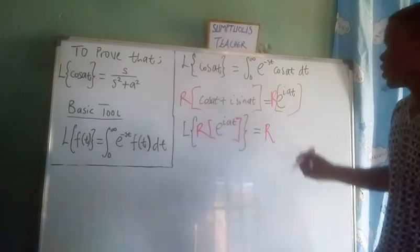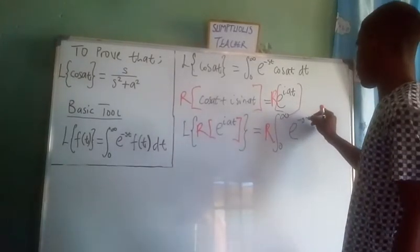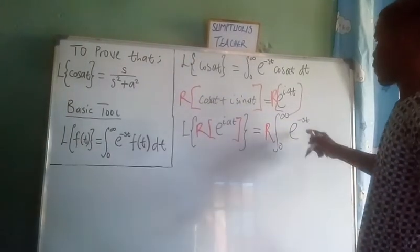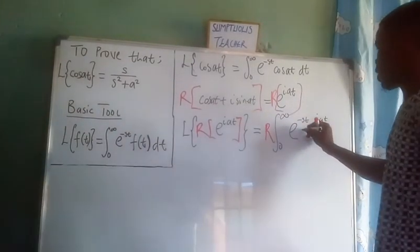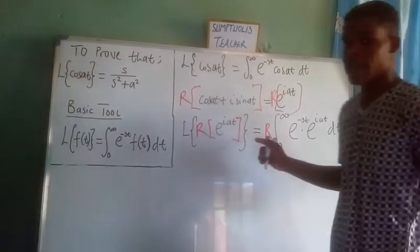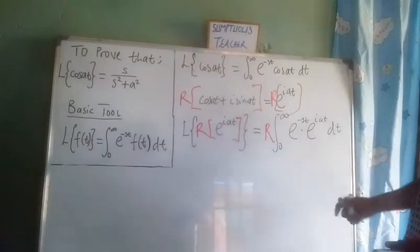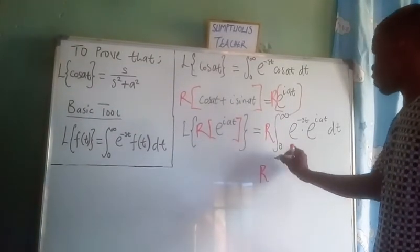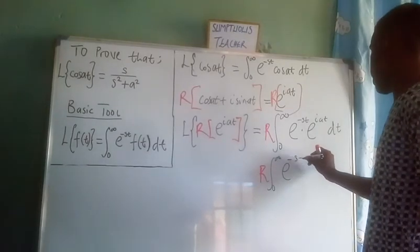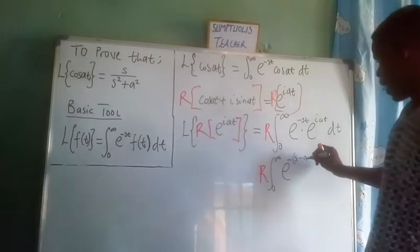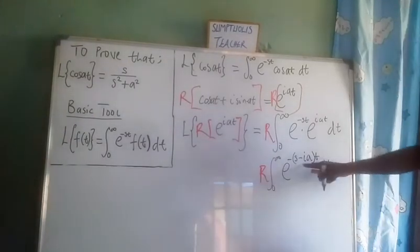We can write the real part operator outside the integral. So we have the real part of the integral from 0 to infinity of e to the negative st times e to the i·a·t with respect to t. We can evaluate the integrand before integrating by combining the exponents, giving us the real part of the integral from 0 to infinity of e to the negative of (s minus i·a)·t dt.